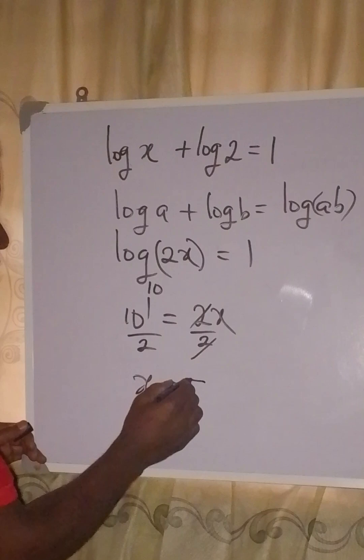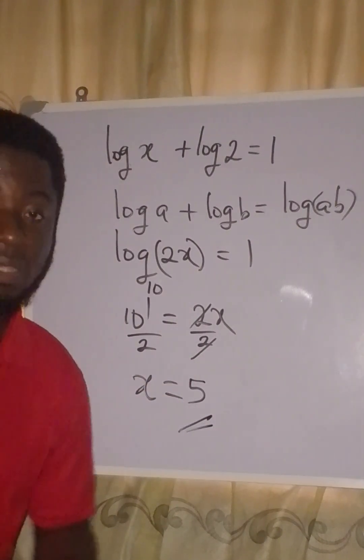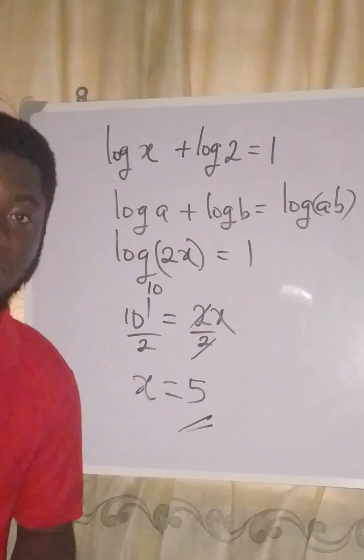So our x will be equal to 10 divided by 2, and that is 5. This is the value of x that satisfies the equation. Thank you for watching.